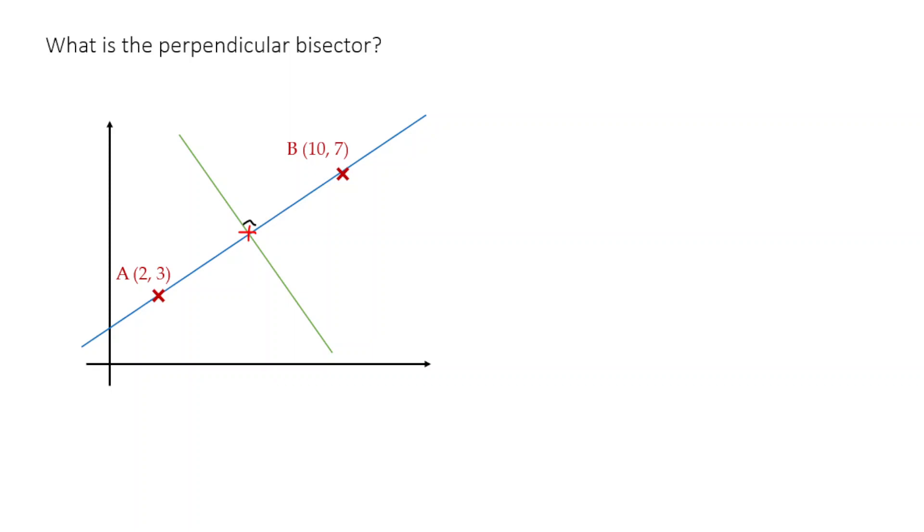Well, remember to find the equation of any line, what we need is a point that that line goes through and we need the gradient of that line. So in other words, we need to find the gradient of the green line and the point that it goes through. Well, we should be able to calculate the point because we know the point is going to be the midpoint here. So we just got to calculate that midpoint.